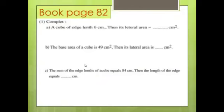Now we solve the book, page 82. Question 1A: A cube with each edge length 6 cm. Find its lateral area. Lateral area = 4L² = 4 × 6² = 144 cm².